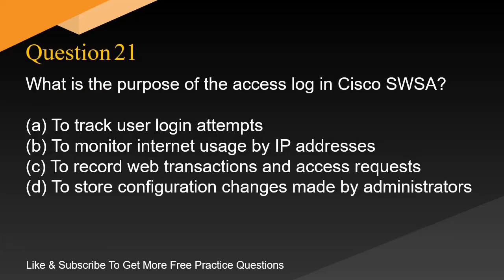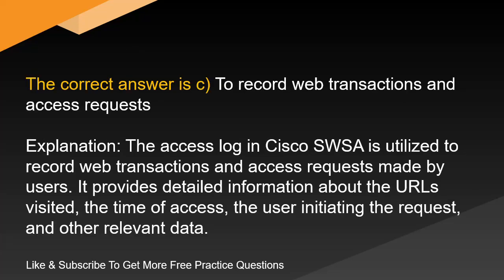Question 21. What is the purpose of the access log in Cisco SWSA? A. To track user login attempts. B. To monitor internet usage by IP addresses. C. To record web transactions and access requests. D. To store configuration changes made by administrators. The correct answer is C. To record web transactions and access requests. Explanation. The access log in Cisco SWSA is utilized to record web transactions and access requests made by users. It provides detailed information about the URLs visited, the time of access, the user initiating the request, and other relevant data.